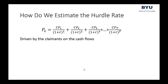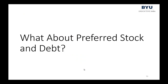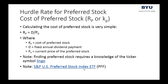We've made huge progress. We started this module asking how we estimate the hurdle rate, and we argued it should be driven by the claimants on the cash flows. For common shareholders, we use CAPM. For preferred stock — which isn't very common — most people just use the dividend yield: take the dividend over the price of the preferred stock, and that's the required return.